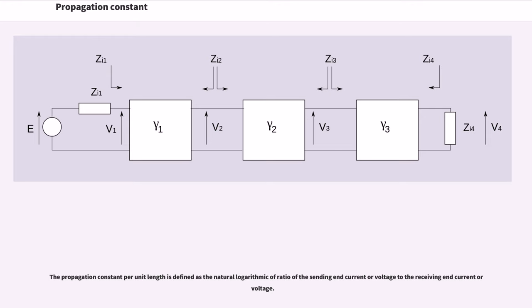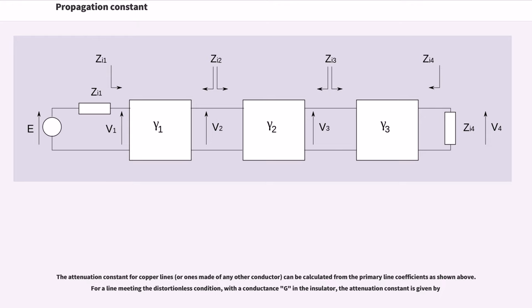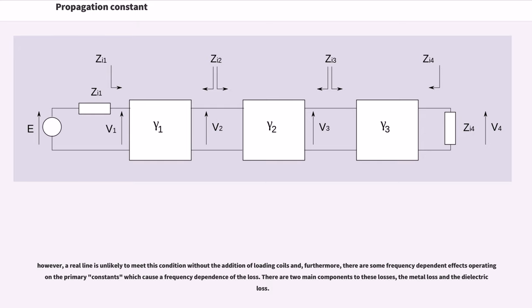The propagation constant per unit length is defined as the natural logarithm of ratio of the sending end current or voltage to the receiving end current or voltage. The attenuation constant for copper lines can be calculated from the primary line coefficients as shown above. For a line meeting the distortionless condition with the conductance G in the insulator, the attenuation constant is given by alpha = sqrt(R*G). However, a real line is unlikely to meet this condition without the addition of loading coils.